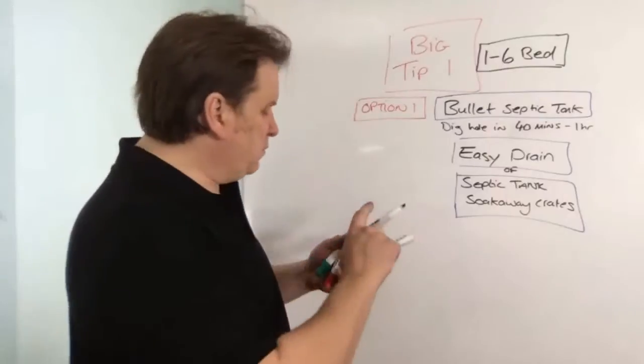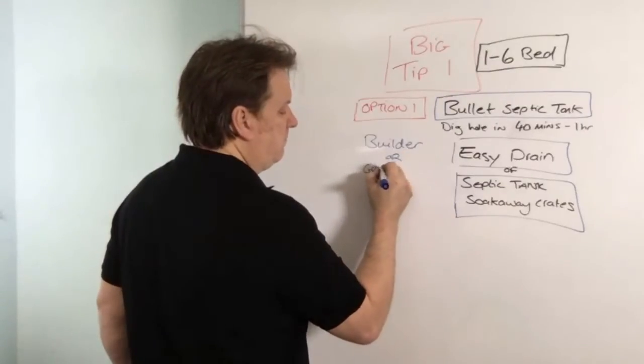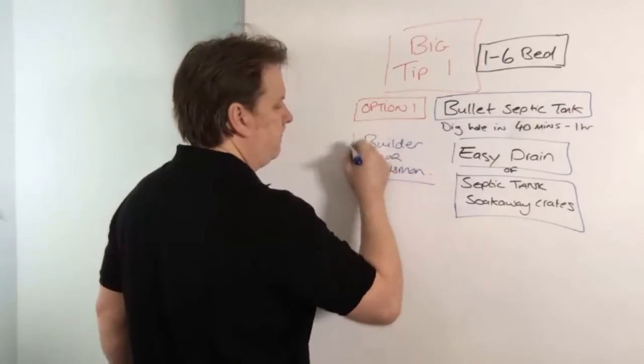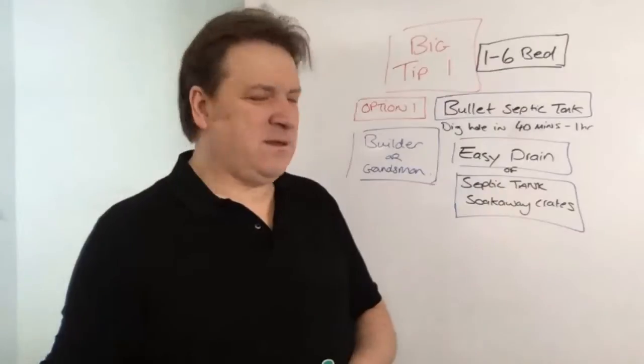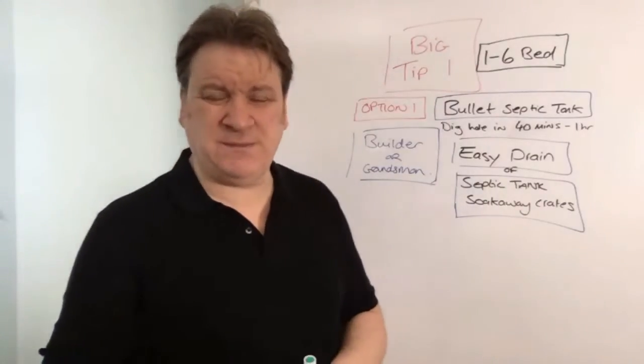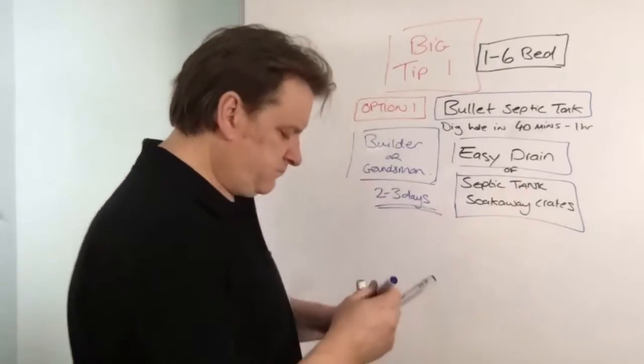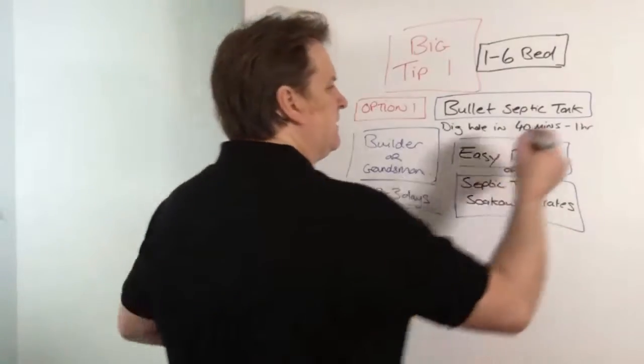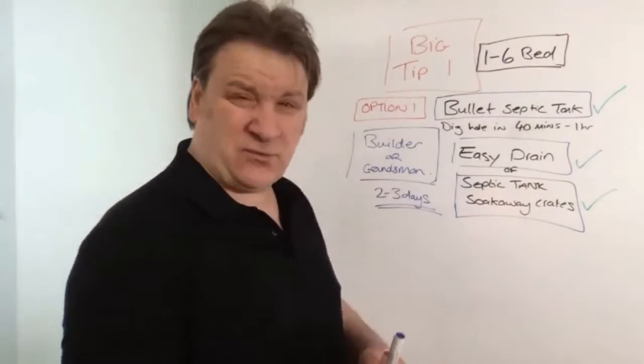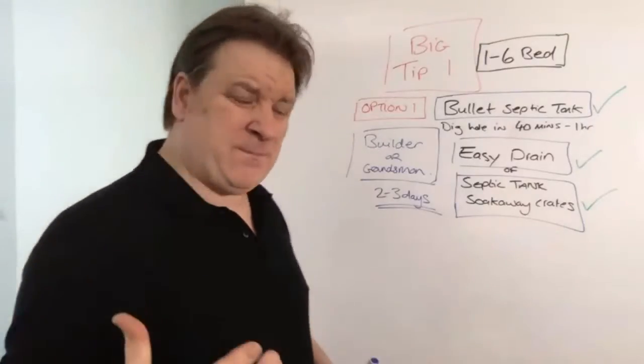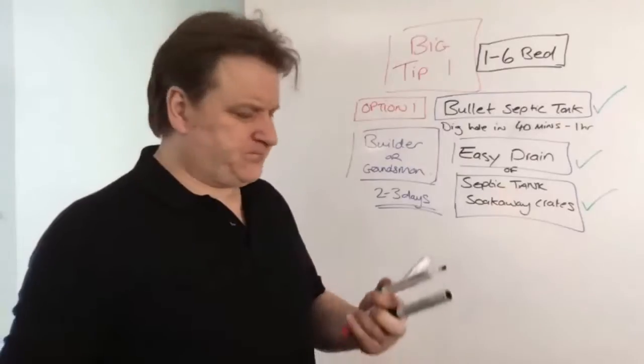The Easy Drain is like herringbone pipes and they don't need any gravel - you literally dig a little trench about half a foot to a foot below the grass, put the pipe in and cover it over with topsoil. The crates you just dig a little pit, put the crates in, put the membrane in and cover with topsoil. So typically Option One, if you get your builder or groundsman to do it, it's going to take the maximum two to three days tops. But the secret lies in getting yourself a Bullet septic tank or Easy Drain or the septic tank soak away crates.